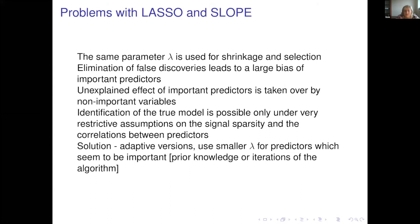This large bias causes unexplained effects to be absorbed by unimportant variables, generating false discoveries and losing prediction properties. Identification of the true model with LASSO and regular SLOPE is possible only under very restrictive assumptions on the signal and the correlation structure. Adaptive versions solve this by using different lambdas for every variable — smaller lambda for predictors that seem important. Even doing this iteratively without prior knowledge, we can theoretically show it eliminates bias for important regressors and discovers the true model under a much wider range of scenarios.